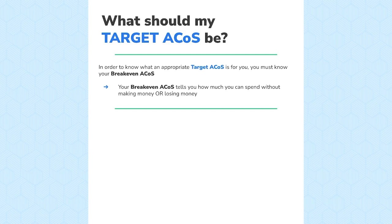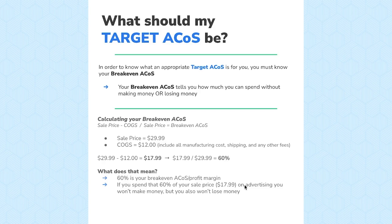So let's take a look at this as a calculation. Break-even ACoS involves a little bit of math because you're basically trying to figure out what you can spend on PPC without technically losing any money. The formula is: sales price minus your COGS, divided by the sales price, equals break-even ACoS.